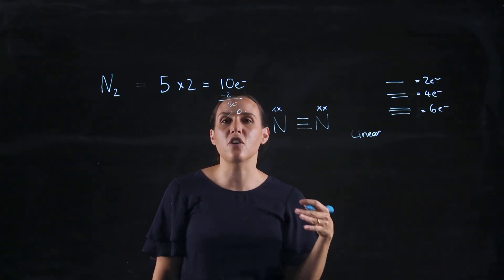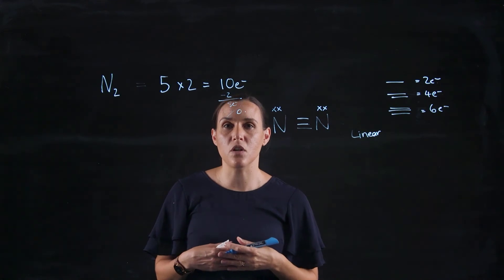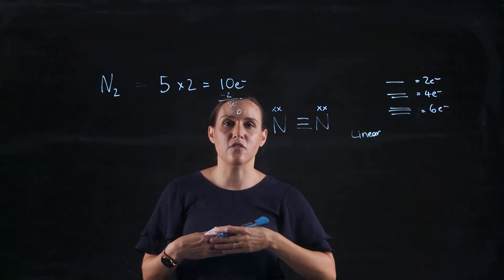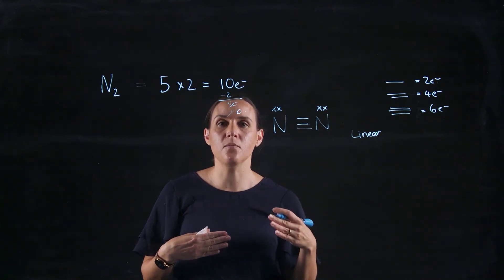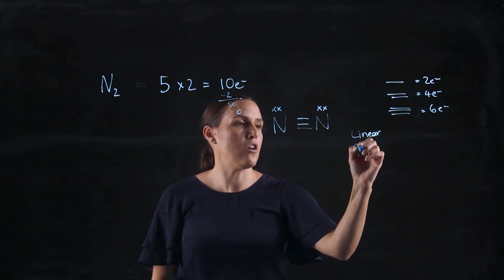So remember, electronegativity is when you're looking at the electrons that are shared between two atoms and which of those atoms will have those electrons sitting on it more of the time. It will be the one that's more electronegative. So this one would be non-polar.